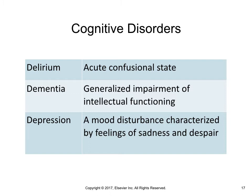Depression is the most common, yet most undetected and untreated impairment in older adulthood. Suicide in older adults accounts for 20% of all suicides. Treatment includes medication, psychotherapy, or a combination of both. Electroconvulsive therapy is sometimes used for treatment of resistant depression when medications and psychotherapy do not help. White men, age 85 and older, have the highest suicide rate in the U.S.